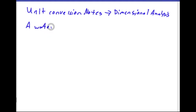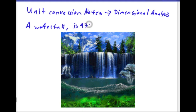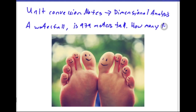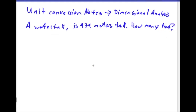Our first question says that a waterfall is about 979 meters tall, and we want to figure out how tall this is in feet. To do that, we need to look at the units we're given and the units we want. We're given meters and we want feet, so we need some sort of relationship from meters to feet.